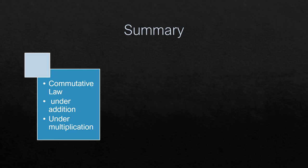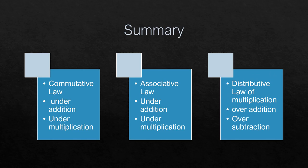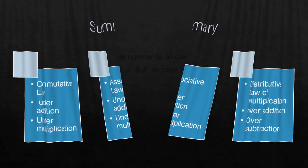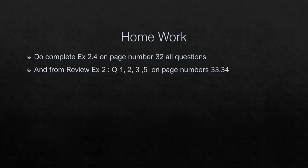What is the summary of this lecture? In this lecture we discussed three things. One is commutative law — under addition and under multiplication — in which we used only two whole numbers. Two is associative law — in associative law we used three whole numbers, first under addition and then under multiplication. And the third one is distributive law of multiplication — first over addition and second over subtraction.